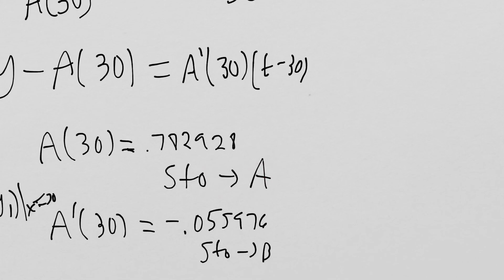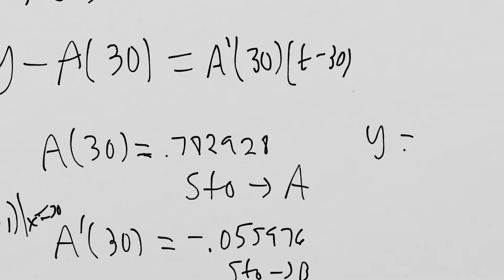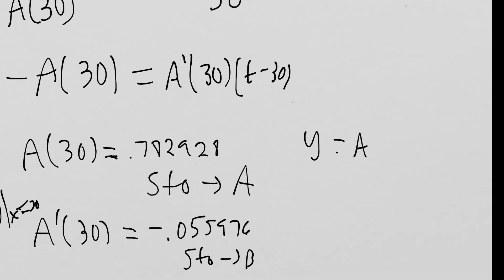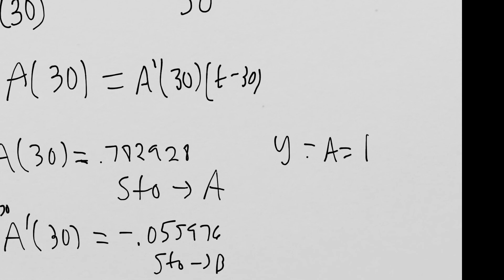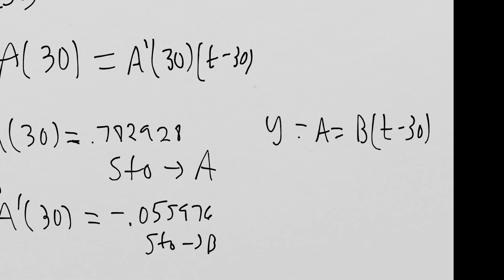Now we have y minus A(30), which is y minus alpha A equals, and then our slope is alpha B times T minus 30. We're going to write this as y equals B times T minus 30 plus alpha A. This is our tangent line in y equals form.